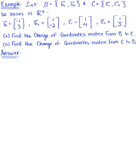Let B and C be bases in R². Vector B₁ is defined as the column vector (-1, 3), vector B₂ is defined as (1, -2), vector C₁ is defined as (1, 4), and vector C₂ is defined as (1, 3). We are asked to find the change of coordinates matrix from basis B to basis C, and then find the change of coordinates matrix from basis C to basis B.